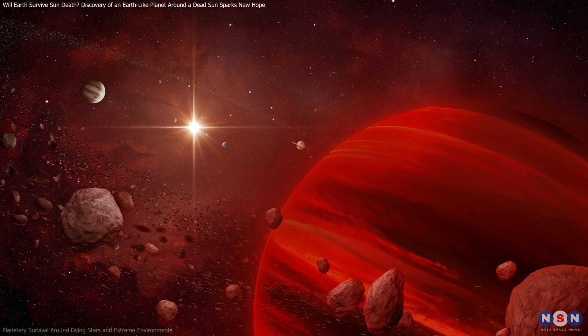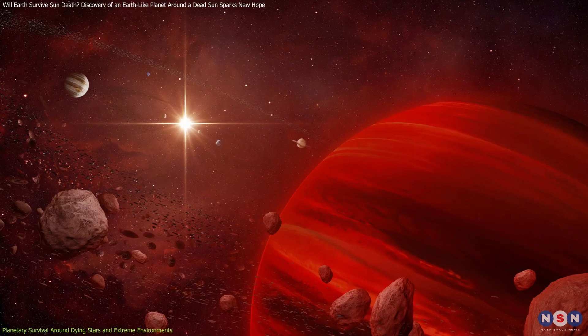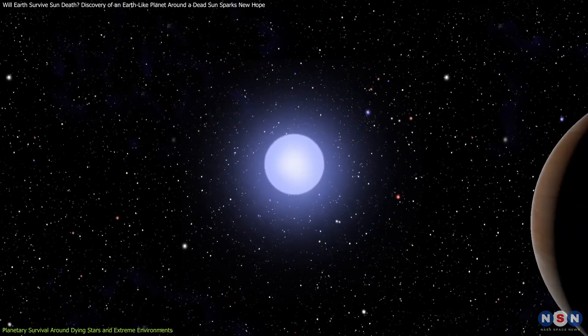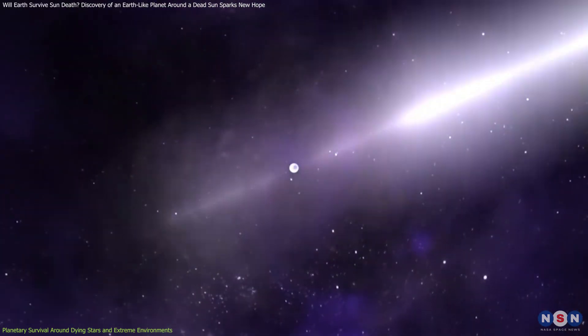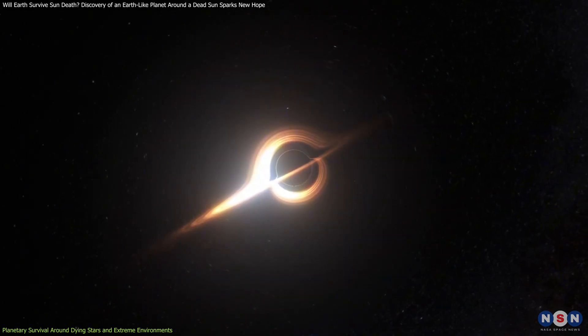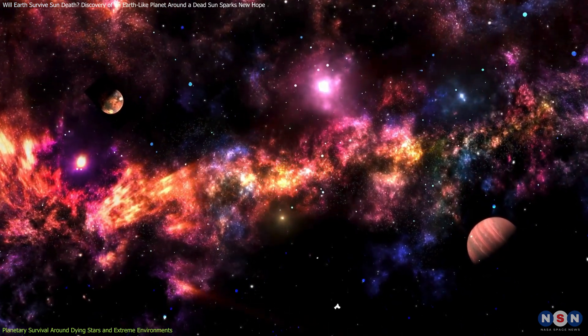Let's expand the discussion. How do planets survive around dying stars? It's not just white dwarfs. Planets have been found orbiting neutron stars and even black holes, environments that seem completely inhospitable.